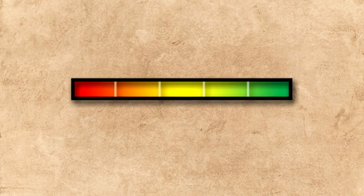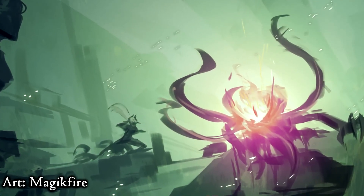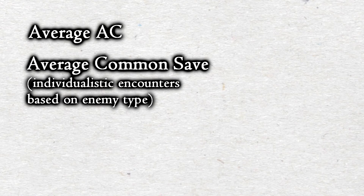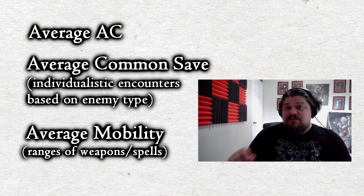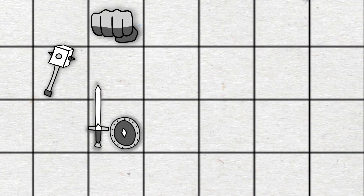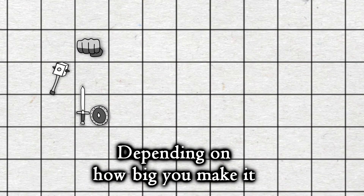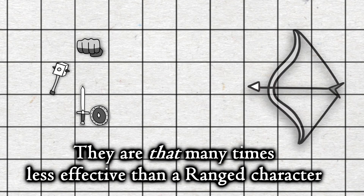When you understand how many hit points your players have, you can calculate how much damage they can take and therefore how deadly your encounter can be. Beyond player HP, you also have to calculate average AC, average common save, and average mobility. Mobility is very important to calculate distances, because if you have a melee-heavy party and you make the arena big, they become that many times less effective than a ranged character.